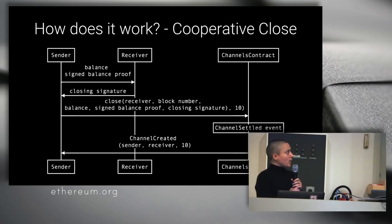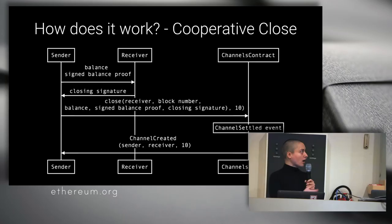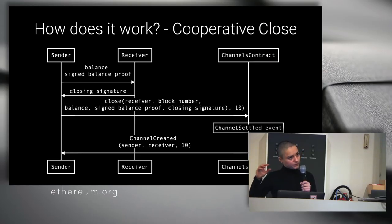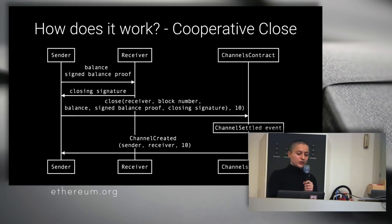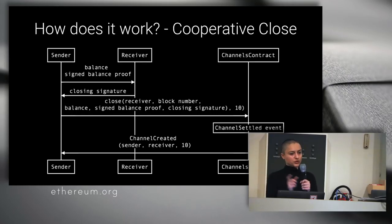About closing channels: the best case scenario is when the sender and the receiver agree on the amount of tokens owed. The sender queries the receiver, sends the balance proof, and the receiver signs the same balance. The receiver sends his own signature back to the sender, and then the sender can close the channel for both of them instantly. There are two more cases: when the receiver is not online or doesn't want to sign, the sender can close the channel, and there's a challenge period in which the receiver, using the last balance proof stored, can close the channel himself. Or after the challenge period has finished, the sender can settle the channel himself — that transaction is also instant.